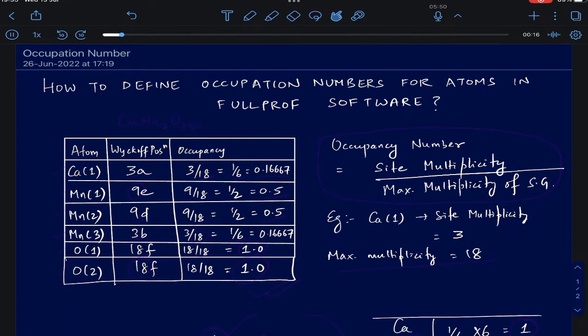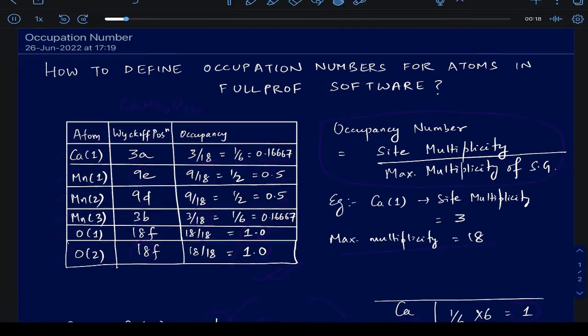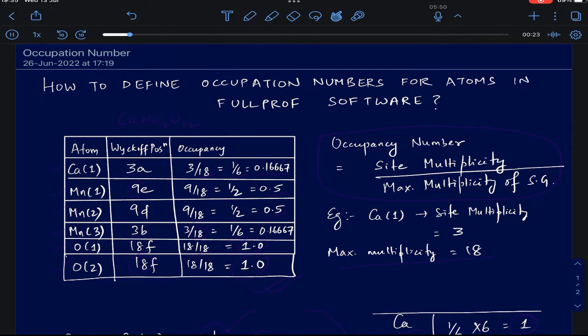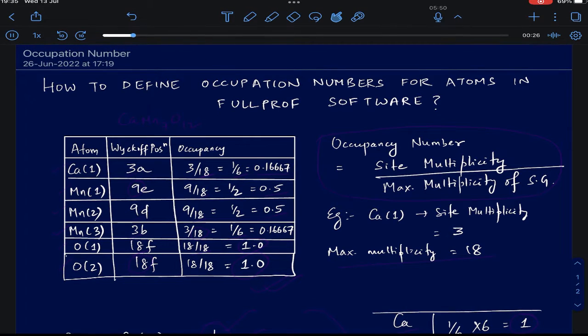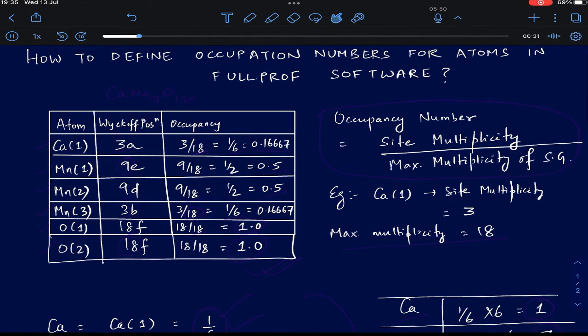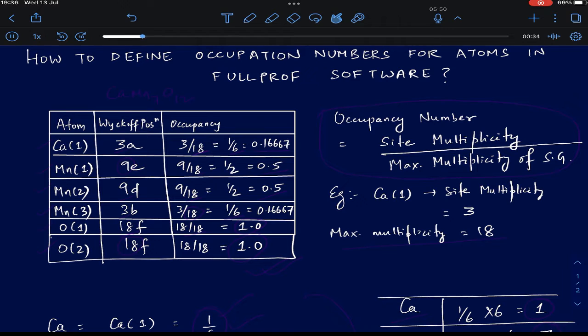In FullProf, you have to manually input the value of the occupancy of each atom so that you can get back the chemical structure satisfactorily. Before you start refining the structure, you should know the crystallographic information of your sample: its Wyckoff position, XYZ coordinates, occupancy number for each atom, as well as the lattice parameters so that you can start refining those values and reach a satisfactory fit.